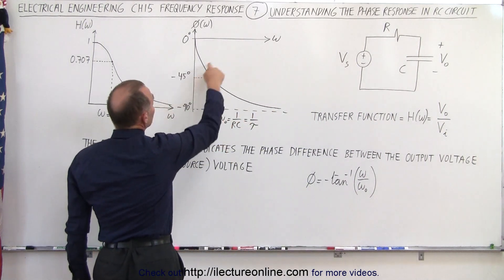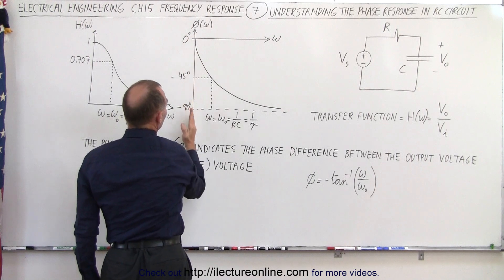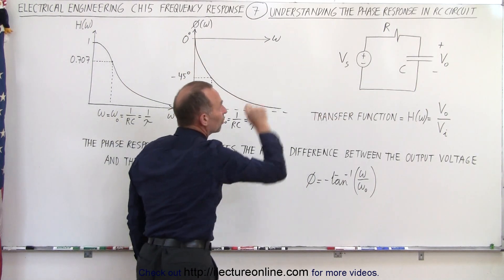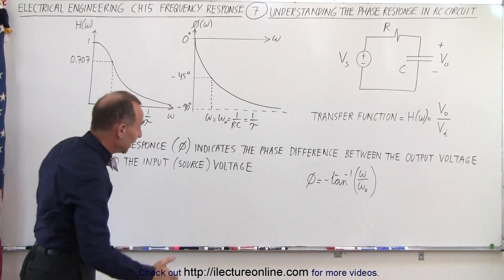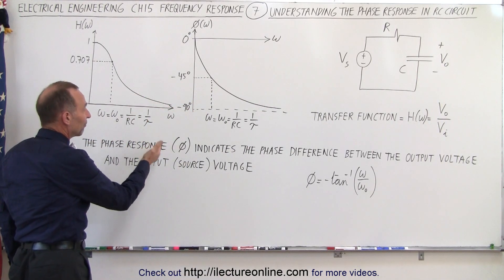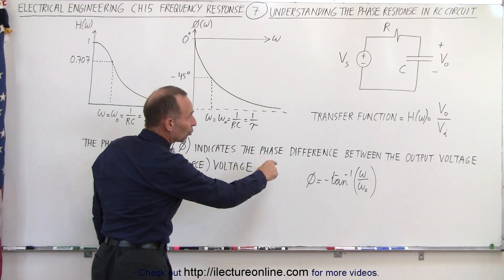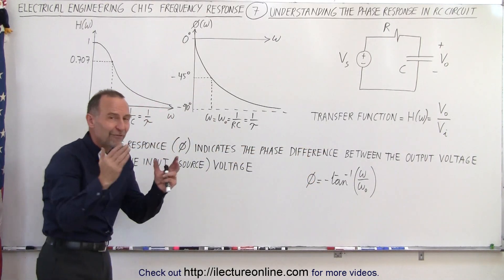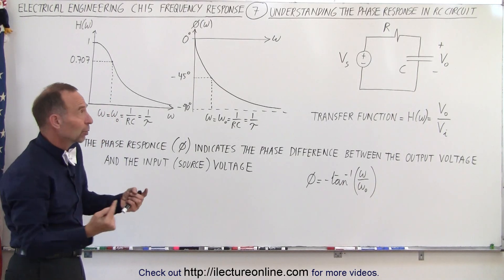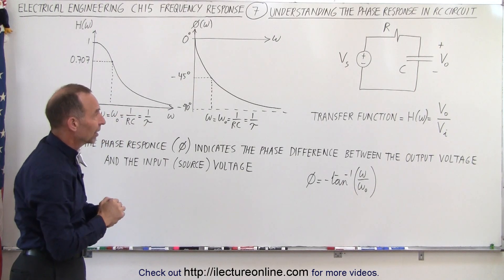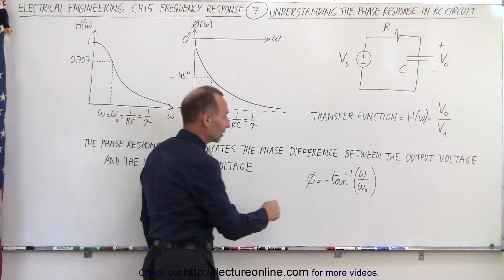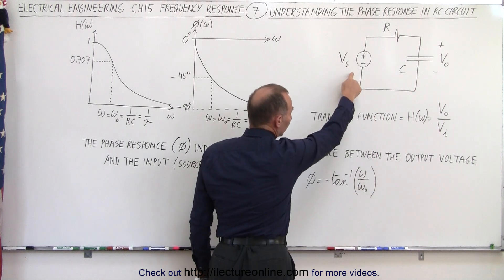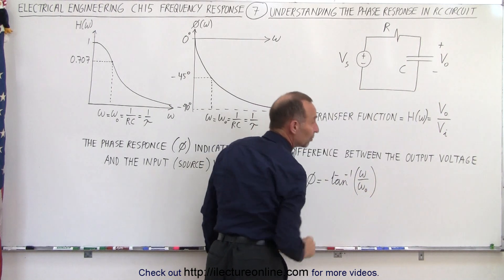Looking at the phase response, that's indeed what we see. When the frequency is very small, the phase difference between the output voltage and the input voltage is equal to zero. The phase response is defined as the difference in phase between the output voltage and the input voltage. If there's no phase difference, the phase angle is zero. The phase angle is calculated as negative the inverse tangent of the frequency of the input voltage divided by omega sub-naught.